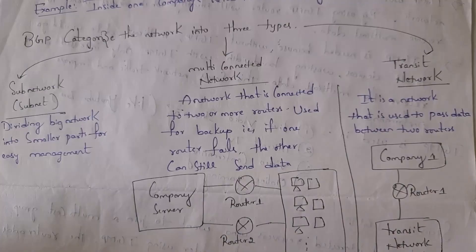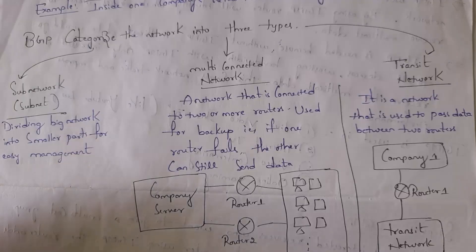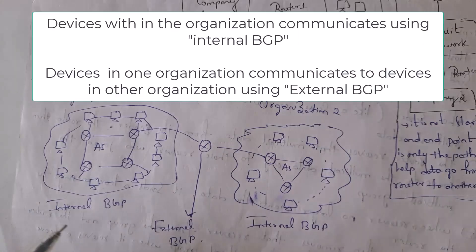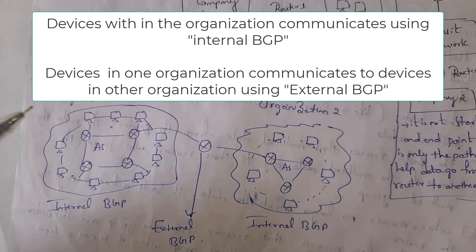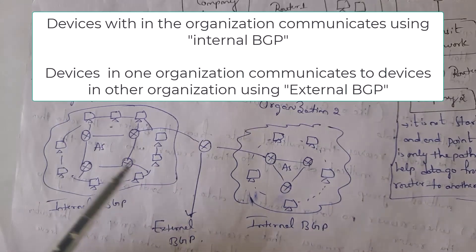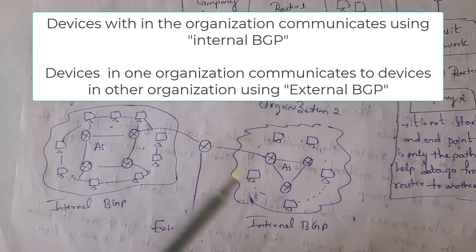BGP divides our network into three categories. The first one is sub-network, shortly called subnet — dividing a big network into smaller parts for easy management. For example, there is a big network divided into two parts: organization one and organization two. Each organization contains an autonomous system and these two organizations are connected to each other. This is the example of a sub-network.